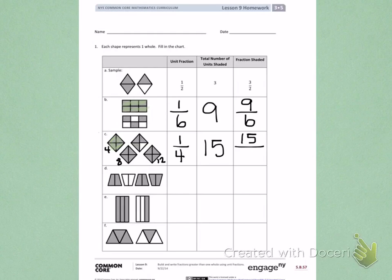Each of the wholes is divided into fourths, which is my unit, so my fraction is 15 fourths. These fractions are more than one whole, so we need to keep in mind that the numerator is going to be bigger than the denominator.